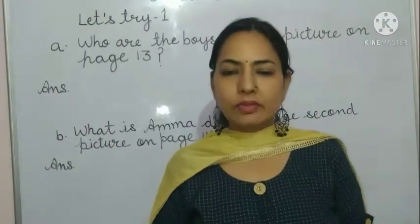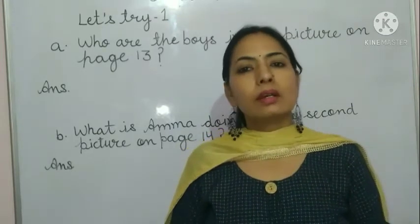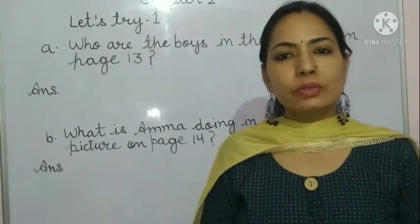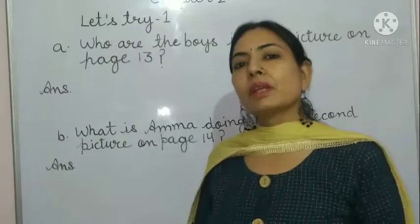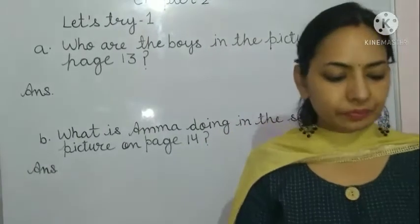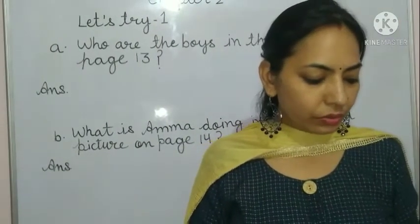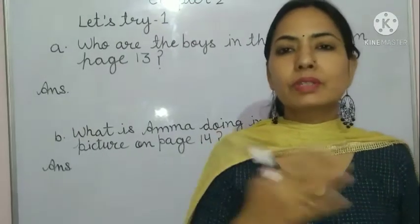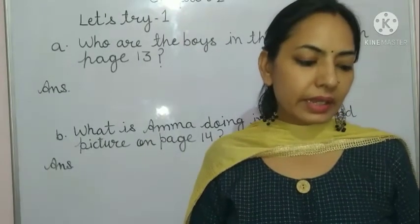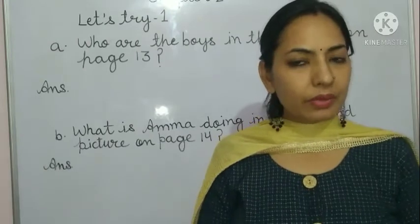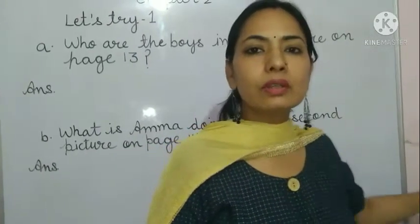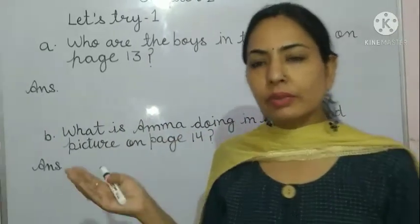Hello, good morning class. This is the English class. Today I am going to teach you Chapter 2. In Chapter 2 we have read the story about the identical twins. Today we are going to do the exercises. First we are going to do Let's Try 1. What we have to do: looking at the picture — we have been given some pictures in the story. Look at the pictures on page 13 and then answer the questions. Open your book to page 13.